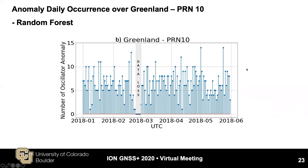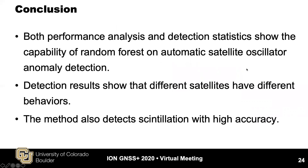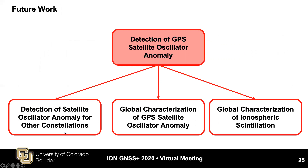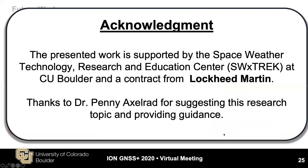This concludes our work on satellite oscillator anomaly detection. In conclusion, both performance analysis and detection statistics demonstrate the capability of random forest for automatic satellite oscillator anomaly detection. Preliminary detection results show that different satellites have different behaviors, and the method detects not only oscillator anomaly but also scintillation with high accuracy. In the future, we plan to design detection methods for other constellations, apply the method to more data, and conduct global characterization of GPS satellite oscillator anomaly and scintillation. This work is supported by the Space Weather Technology Research and Education Center at CU Boulder and a contract from Lockheed Martin. Thanks to Dr. Penny Exeteran for suggesting this research topic and providing guidance.